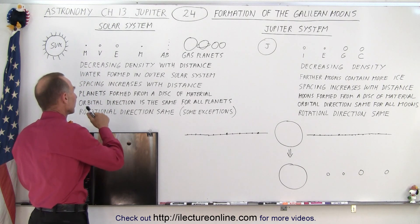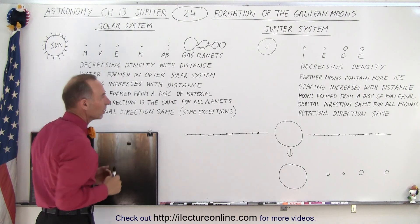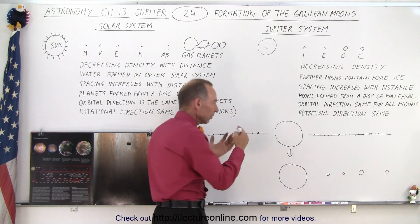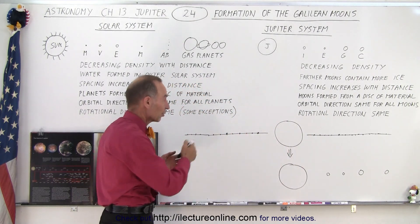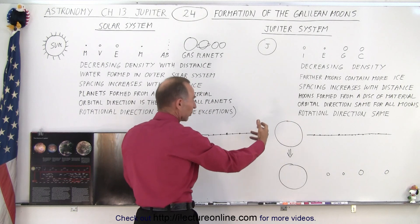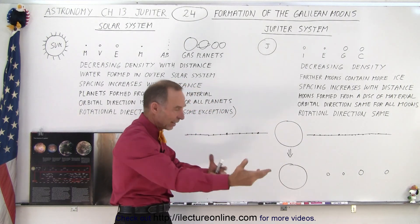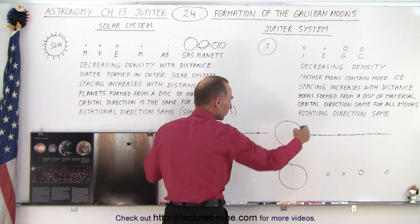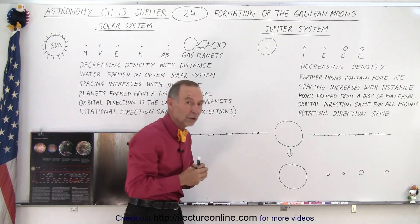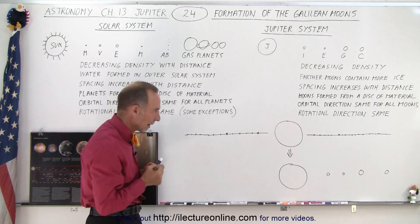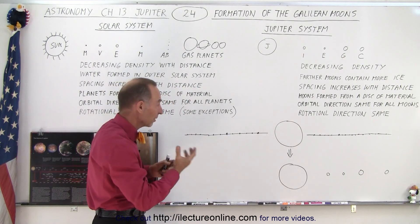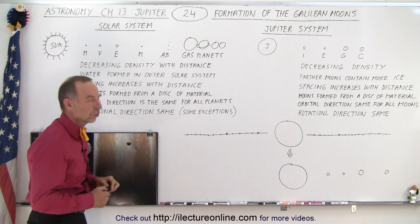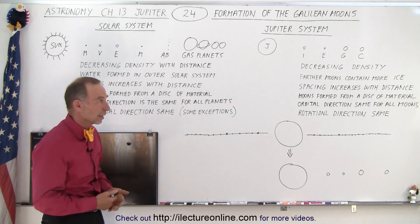We can also presume that the planets formed from a disk of material around the Sun, and in the same way the moons were formed from a disk of material that at first was a lot of debris around Jupiter. Especially since Jupiter was so large as it formed, it pulled a lot of material in that was in the solar system. That coalesced into a disk of material and then slowly over time those larger pieces came together gravitationally, pulling in smaller pieces, so that eventually they formed the four moons — just like a similar process happened when the solar system was formed.